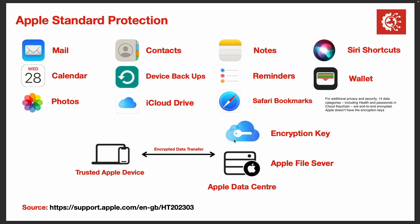So in theory, if a hacker, an unscrupulous person, or a rogue employee somehow managed to get into Apple, they would in theory have access to all your data and the encryption key, so they could decrypt your data and see it. Threats from governments, countries, and even people you know are getting higher because more and more of our data is being stored online. So once it's online, there is a possibility that someone can access it. That's what Apple are trying to combat with advanced protection.